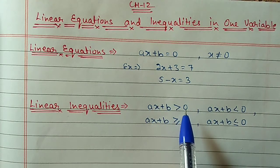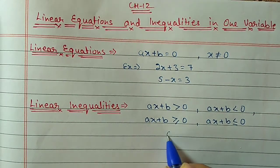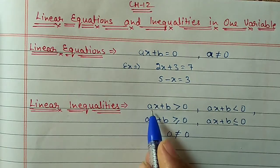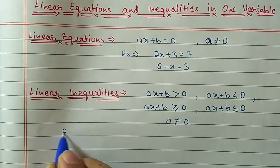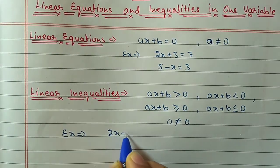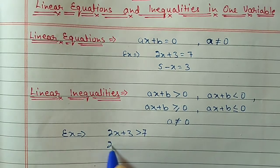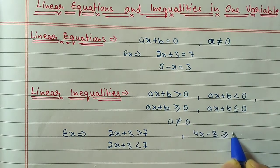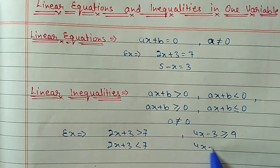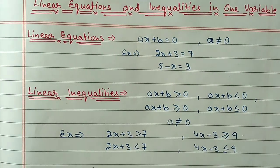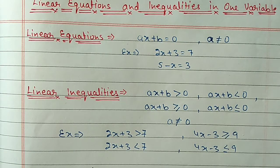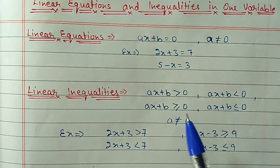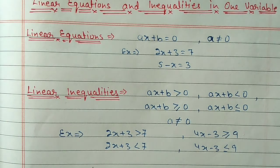It is called an inequation because the left side and right side are not equal. The condition is the same: a should not be 0, meaning the coefficient of x should not be 0. For example: 2x plus 3 greater than 7, or 2x plus 3 less than 7, or 4x minus 3 greater than or equal to 9, or 4x minus 3 less than or equal to 9. These are examples of linear inequations — you can identify them by these symbols.